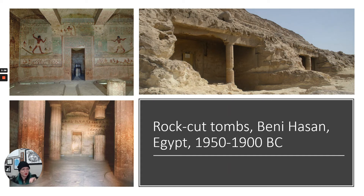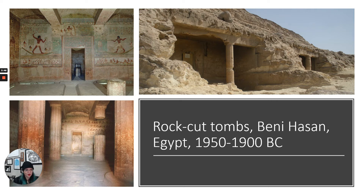Fresco buono is painted in wet plaster, so that as the plaster cures, the first layer of paint becomes part of the wall. It's used much later, a lot in the Renaissance, for example. Fresco secco literally means 'fresh dry' in Italian.